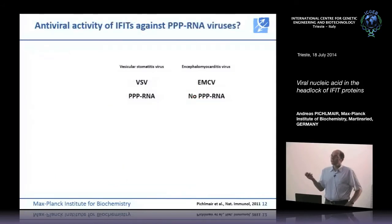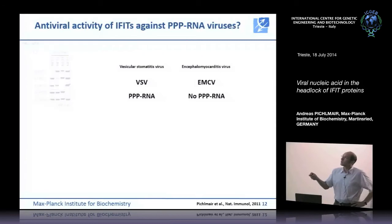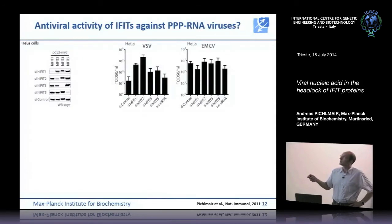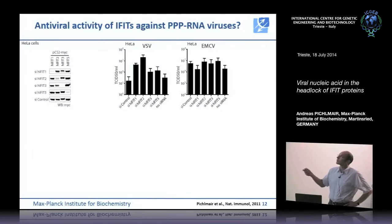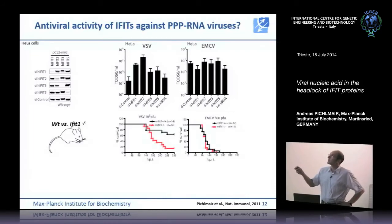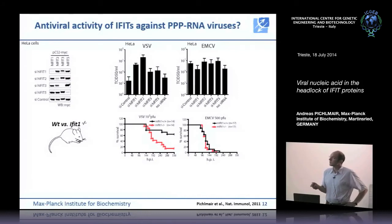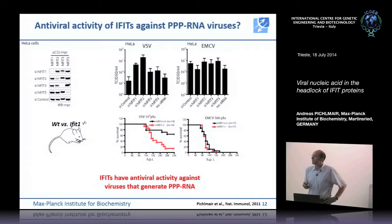We tested whether this has any effect in an infectious setting using two different viruses: vesicular stomatitis virus (VSV), which generates 5' PPP RNA, and encephalomyocarditis virus, which does not generate PPP RNA. Knocking down IFIT1, 2, or 3 in cells showed that VSV was growing much better compared to control knockdown. This difference in virus growth was not apparent for encephalomyocarditis virus, suggesting specificity for viruses generating 5' PPP RNA. We confirmed the same happens in vivo by knocking out IFIT1 in mice — they were much more susceptible to VSV compared to control mice — while the control virus showed no difference.